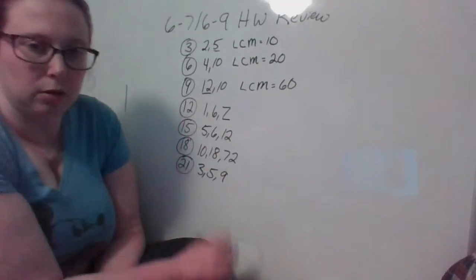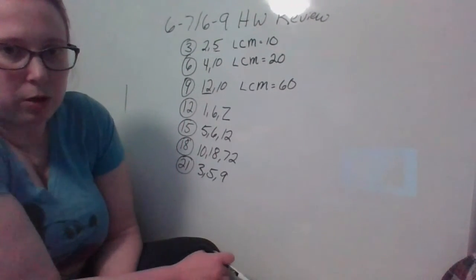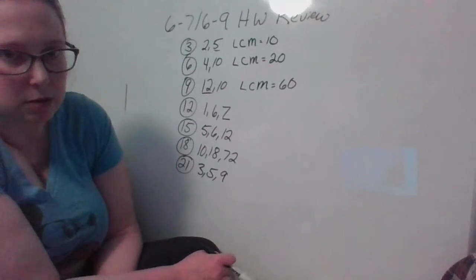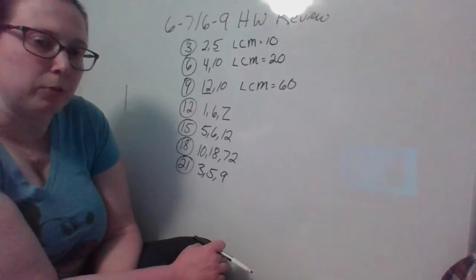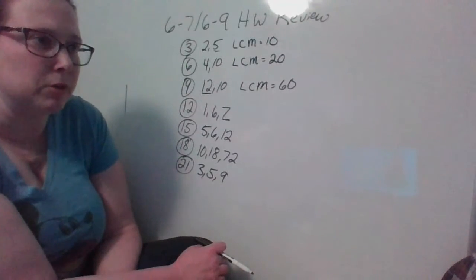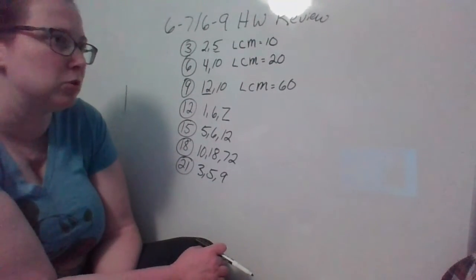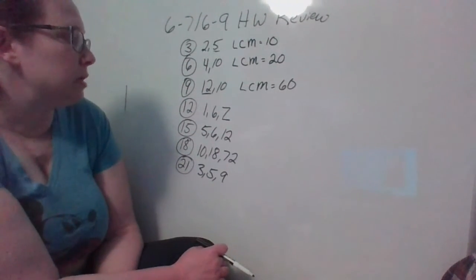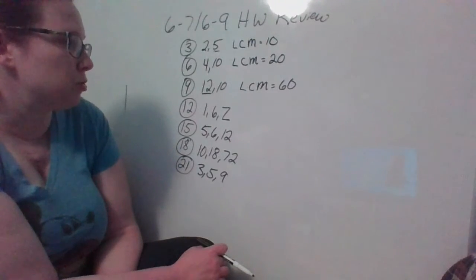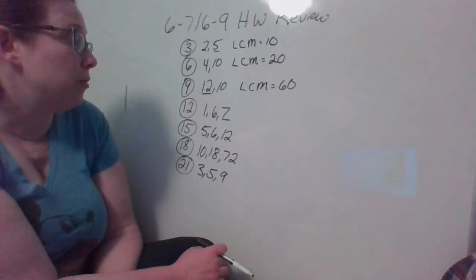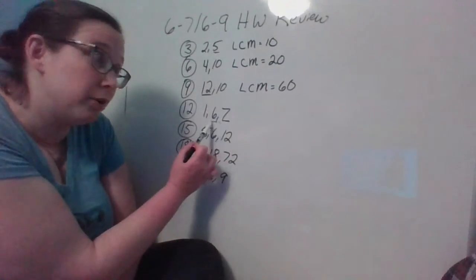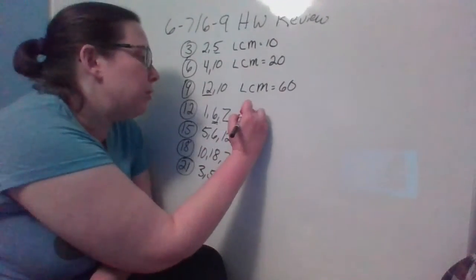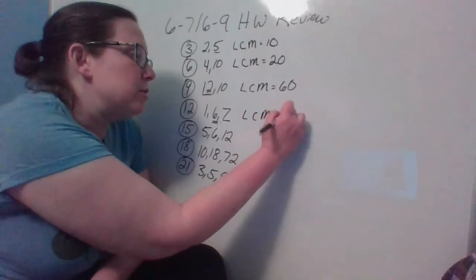So sixty is our least common multiple. One, six, and seven. I'm starting with seven. The six does not go into it. One, of course, is going to go into anything, so kind of silly to include one here. When we're working with seven though, we do seven times two is fourteen, times three is twenty-one, times four is twenty-eight, times five is thirty-five, times six has to work because our other number is six. So our LCM is forty-two.